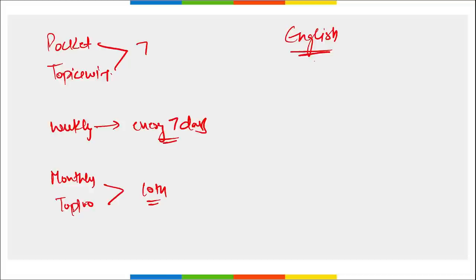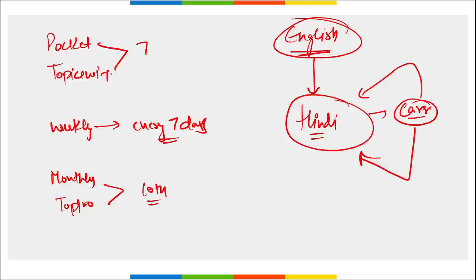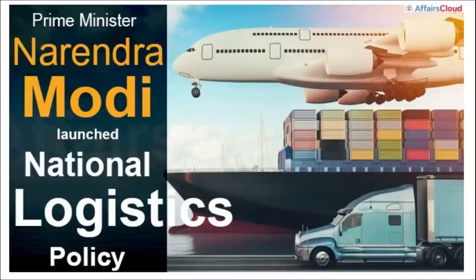For students looking for Hindi PDF content, you can check our Carriers Cloud application, which you can download from the Google Play Store. From that application, you will be able to see various courses offered by us, which include Hindi PDFs along with English content. Students aiming for Hindi content can definitely check our Hindi PDFs on the Carriers Cloud application.